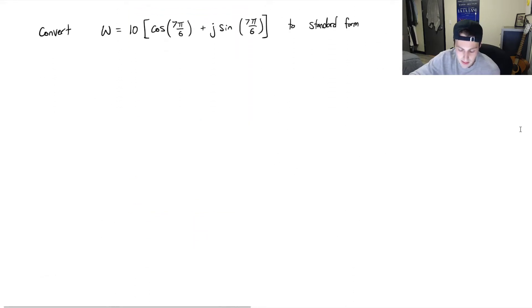So let's convert w = 10[cos(7π/6) + j sin(7π/6)] to standard form. I always like to visualize things because I think it makes understanding a lot easier. So we'll draw our real axes, our imaginary axes. And 7π/6, that's going to look like this more or less. It's π over 6 past π. It's like π plus π over 6.